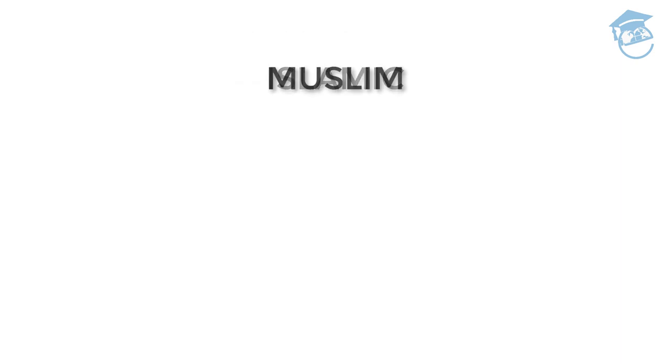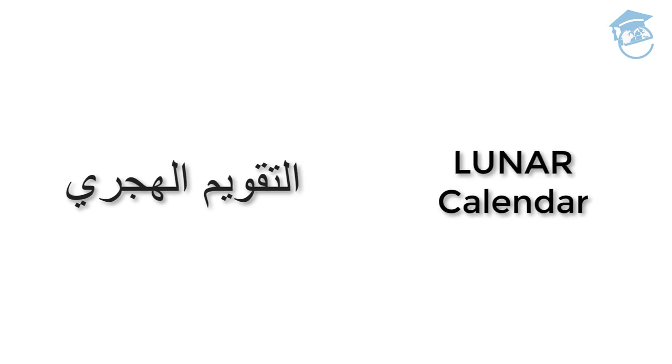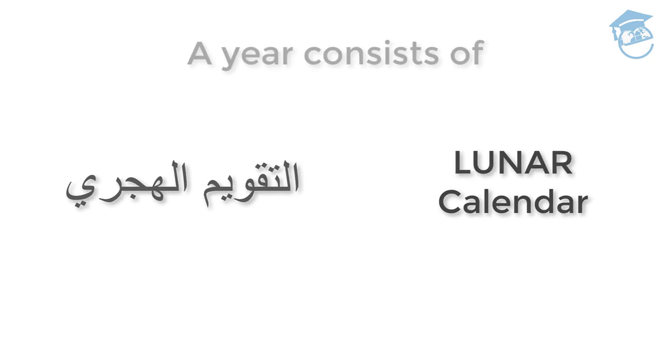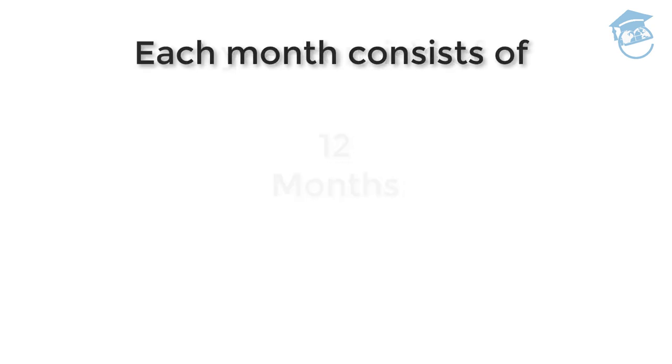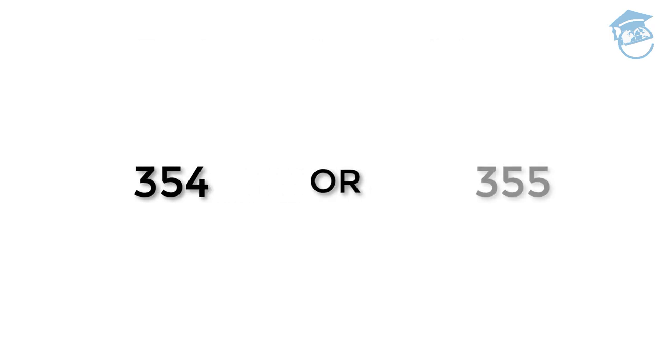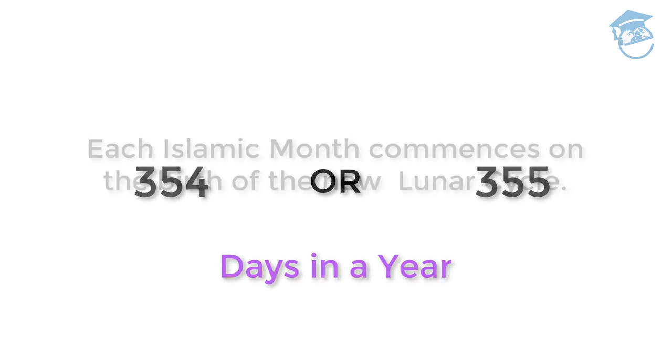The Islamic, Muslim, or Hijri calendar, also known as at-Taqweem al-Hijri in the Arabic language, is a lunar calendar. A year consists of 12 months. Each month consists of 29 or 30 days, making a total of 354 or 355 days in a year.